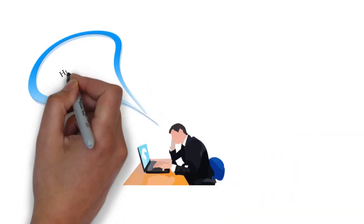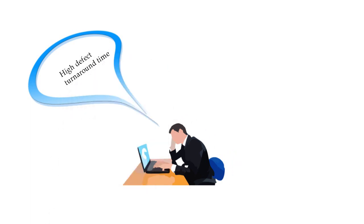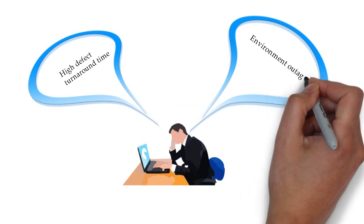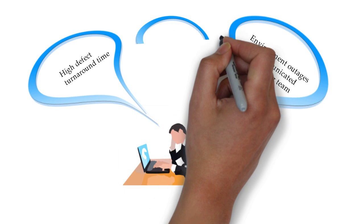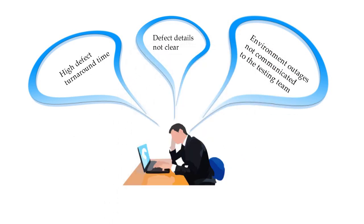Another risk can be high defect turnaround time. If the time to fix the defect is very high, it can impact the schedule of the project. The linked test cases would be blocked until the developer fixes that defect. Another risk is environment outages not being communicated to the testing team. If environment outages are not communicated, testers would continue testing and observe unexpected behavior of the system. Their effort would be wasted. If defect details are not clear, the development team will go back to the tester for clarity and time would be wasted, causing delay in fixing the defect.